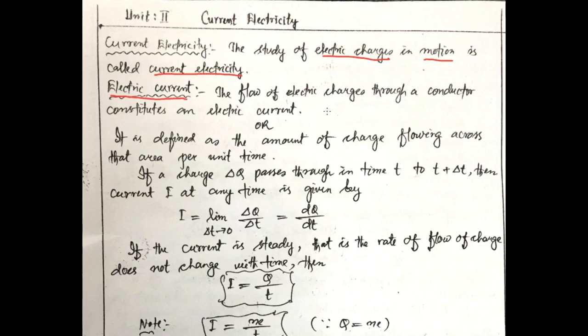It is defined as the amount of charge flowing across that area per unit time. The amount of charge flowing across that area per unit time is also called Electric Current.